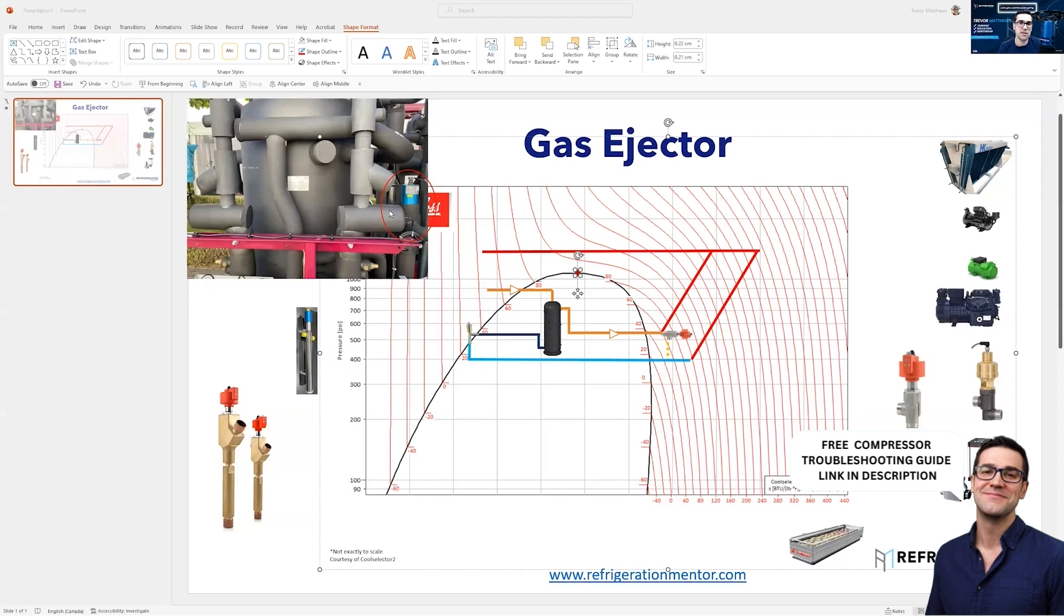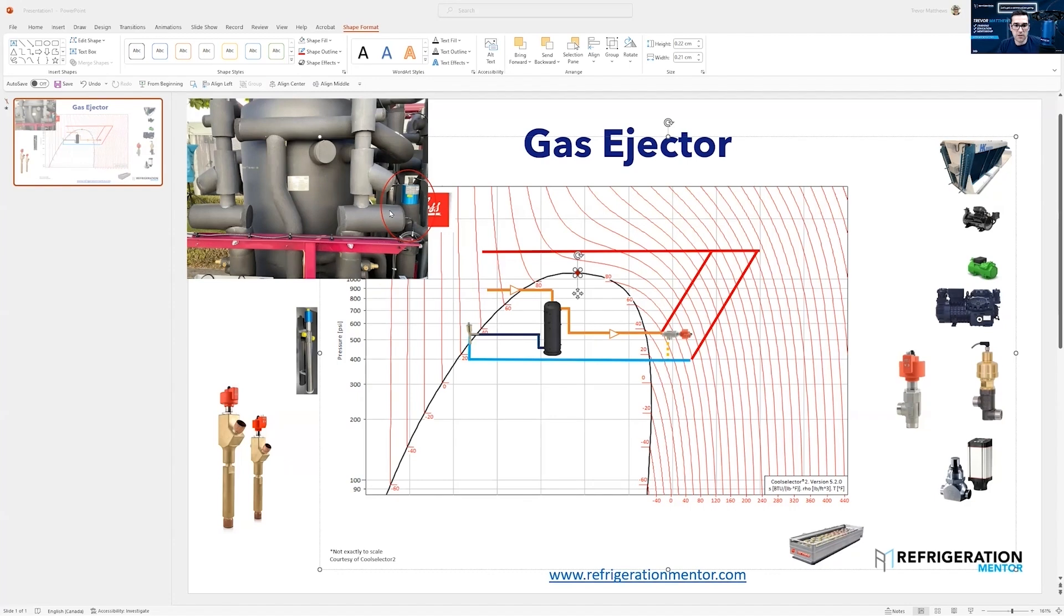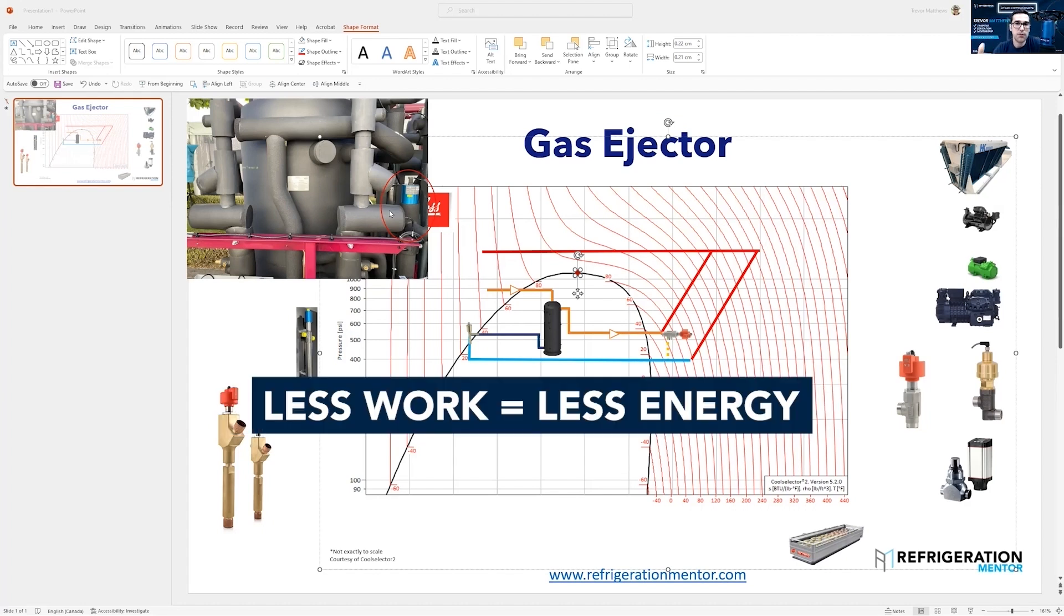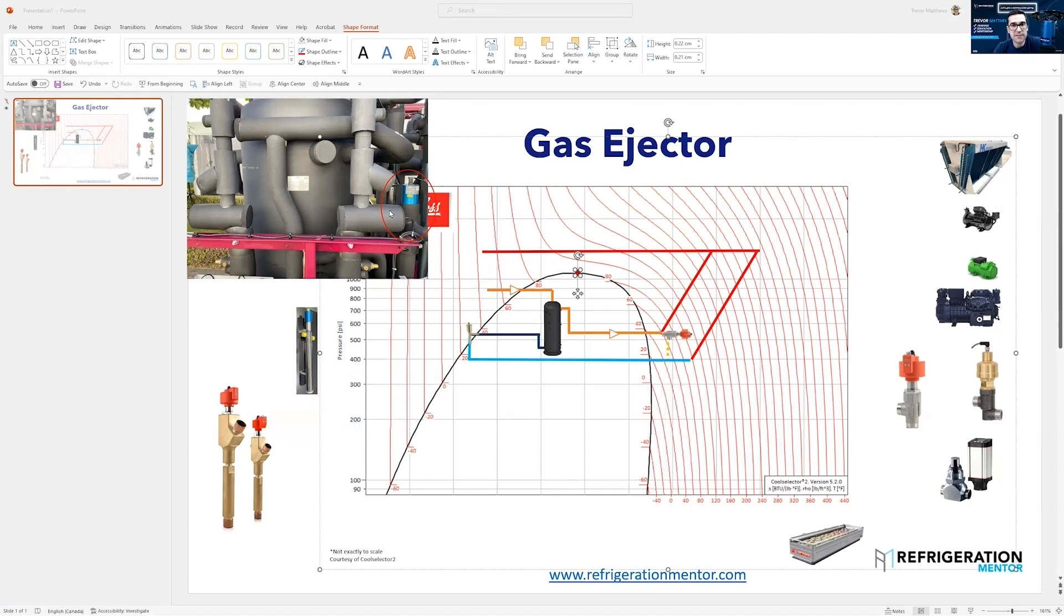I talk about this all the time in my compressor programs. When you have that smaller pressure ratio, smaller compression ratio, that is less work on the compressor and system. That means it takes less energy to get the amount of capacity you're looking for.